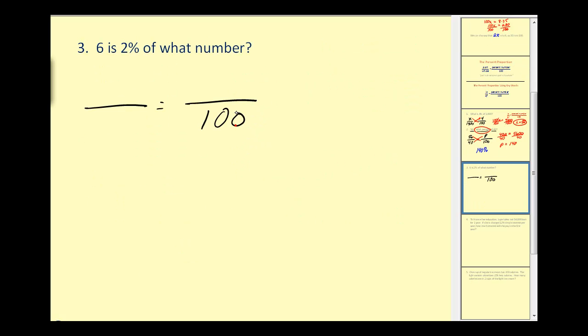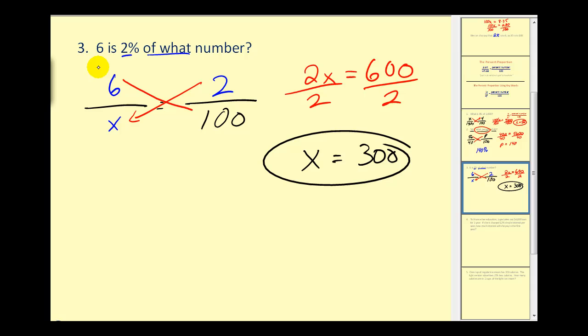Let's try another. Remember, it's 'is over of' equals p over 100. First, I see we have the percentage: 2/100. '6 is'—that's the part. Remember, 'is over of', and I always remember that because I comes before O, so it's in alphabetical order. We're looking for the number associated with 'of', which will be our whole, so we'll have our x down here. Cross products: 2x must equal 600, divide by 2, to obtain x equals 300. Let's see if this makes sense: 6 is 2 percent of 300. That's logical—6 is a small percentage of this larger number, 300.